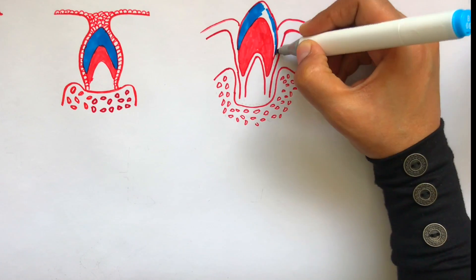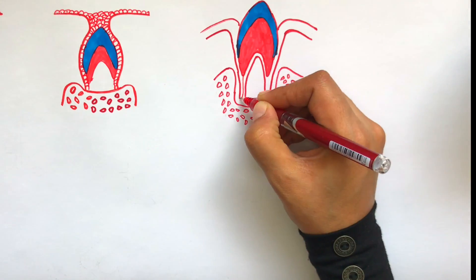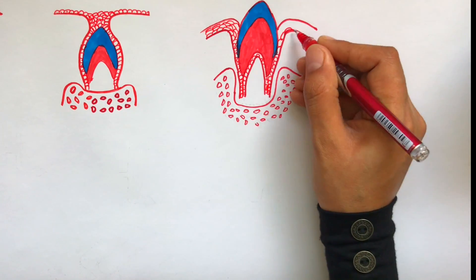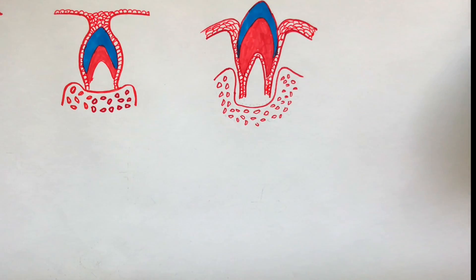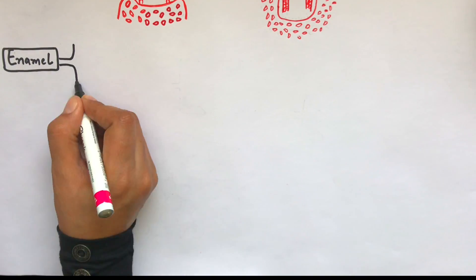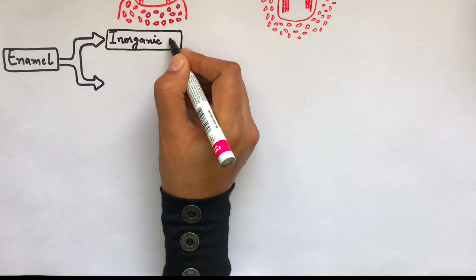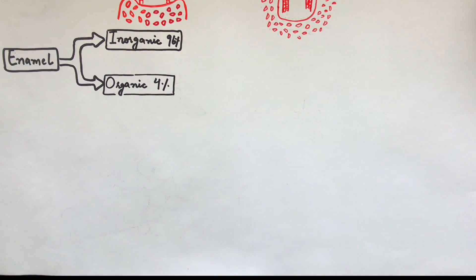Which means that enamel cannot be reformed or reproduced once it's damaged by any stimulus because there will be no ameloblasts to reproduce it once it's damaged, and this is the reason that enamel is known as the hardest tissue of the human body, composed of 96% inorganic material and only 4% organic material and water.